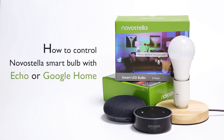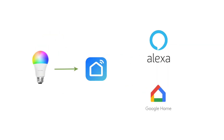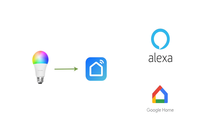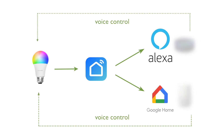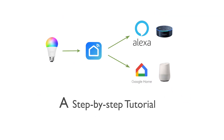How to control Novastella Smart Bulb with Echo or Google Home. First, connect your Smart Bulb to the Smart Life app. Second, link Smart Life to the Alexa or the Google Home app. Then you can control the light bulb with voice control using Echo or your Google Home speaker. Today we are going to show you a step-by-step tutorial. Let's get started!